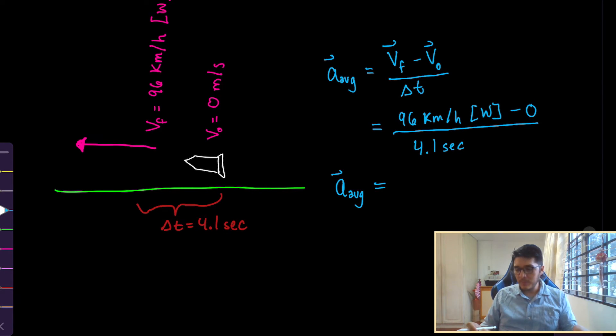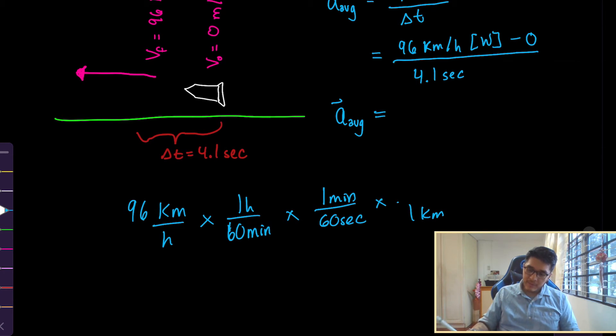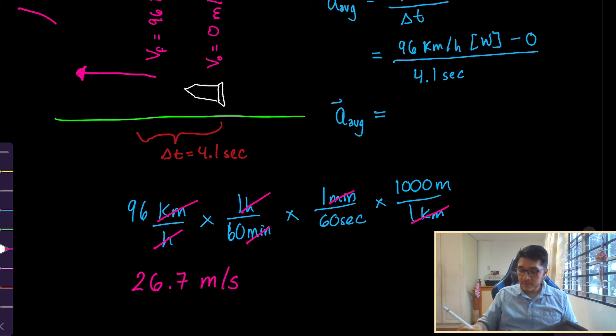96 kilometers per hour. Cancel out hours, put it on top. There's 60 minutes. To cancel out the minutes, put 1 minute on top, divided by 60 seconds. To cancel out kilometers, we put it on the bottom and multiply it by 1,000 meters. So what I mean by canceling out, notice that hours are canceled out, minutes cancel out, kilometers cancel out. So you're left with meters per second. So 96 divided by 60, divided by 60, times 1,000. So it would be 26.7 meters per second.